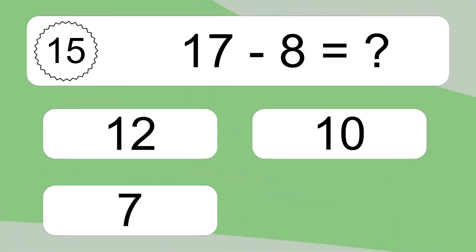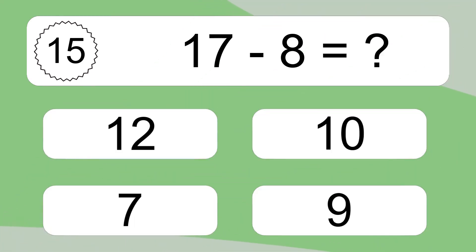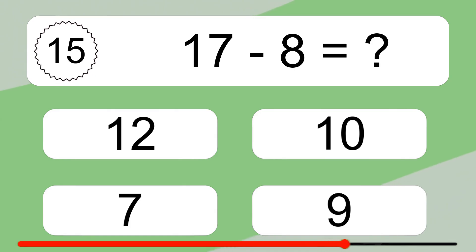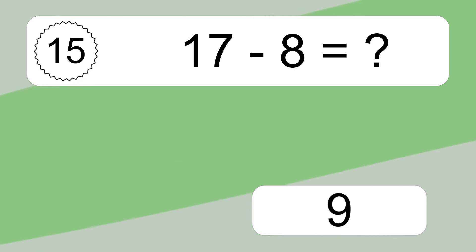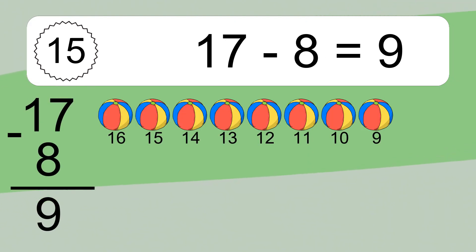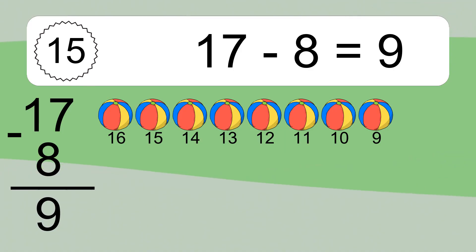17 minus 8 equals what? 17 minus 8 equals 9. Let's count it: 16, 15, 14, 13, 12, 11, 10, 9.